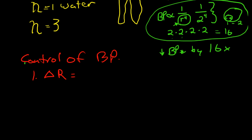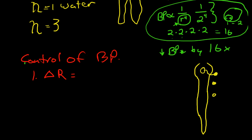In our body, in our vasomotor center — part of our sympathetic nervous system — this is the main place that we control blood pressure. This sends out information via the sympathetic nerves, with sympathetic ganglia that run alongside the spinal cord. We send out information to arteries and arterioles around the body, and those arteries and arterioles all have a muscular layer that responds to stimulus from the sympathetic nervous system.